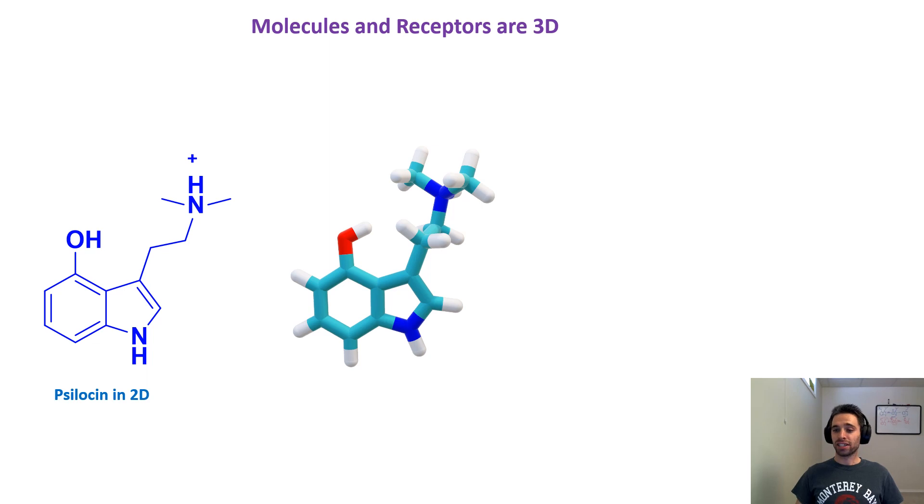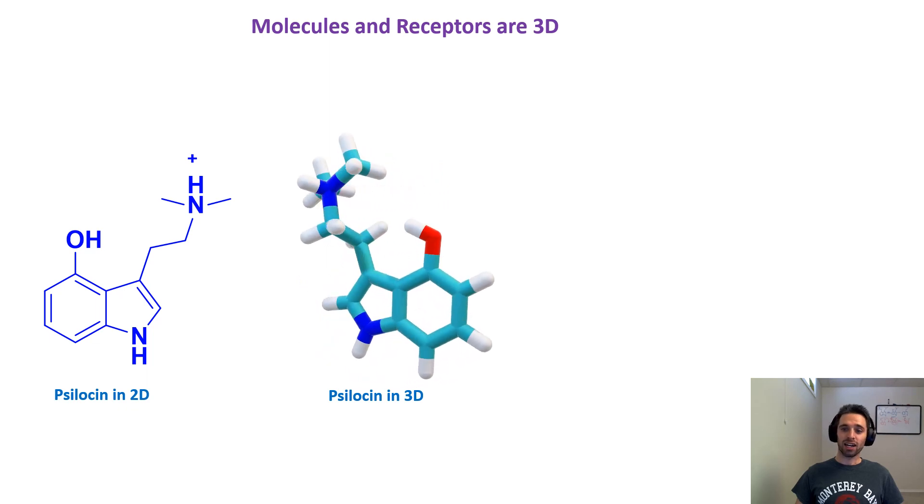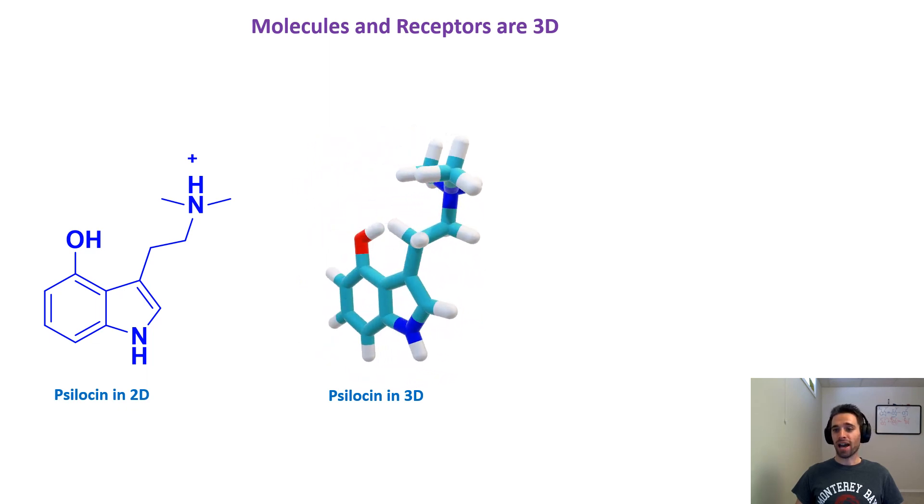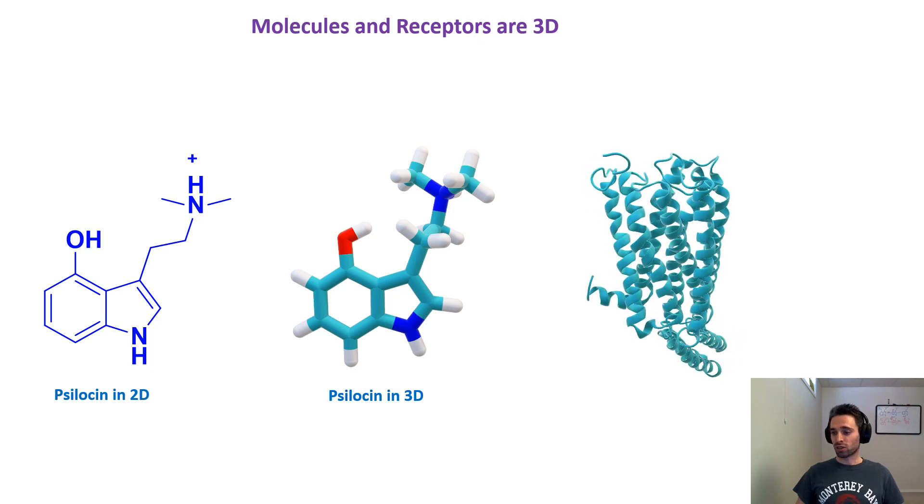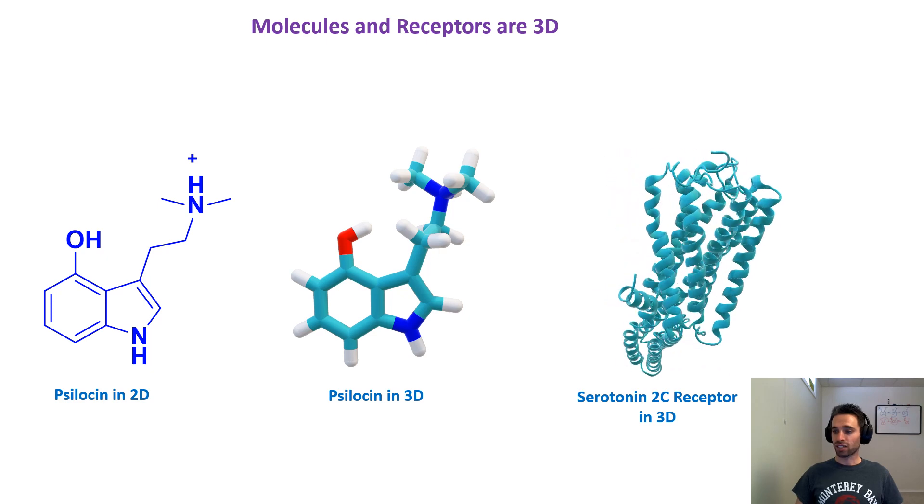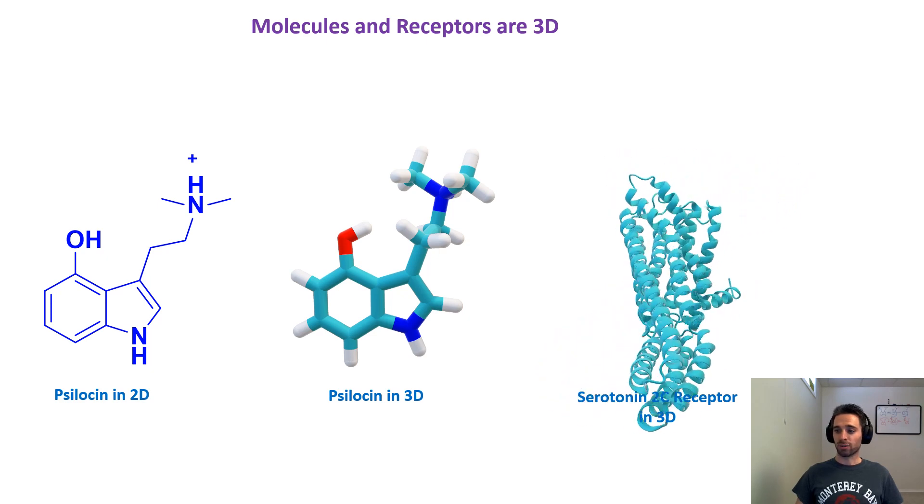This is a more accurate representation of psilocin. This is what it looks like in three-dimensional space. If we spin it around, we can see that hydrogen in the back that gets protonated. And then we also have the serotonin receptor. This is a serotonin 2C receptor, and here's what it looks like in three-dimensional space.